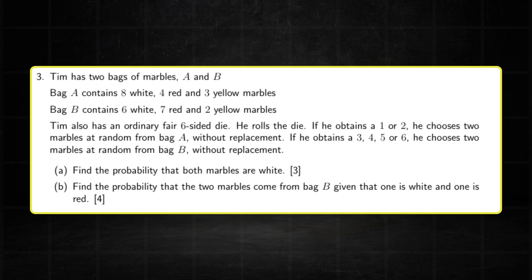Question number three is a probability question. This particular question involves sampling without replacement, which is also the same as the February-March 2024 probability question — hence why I chose this question.